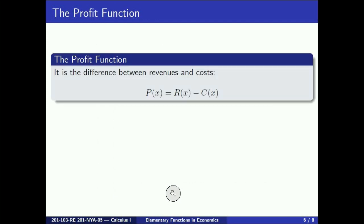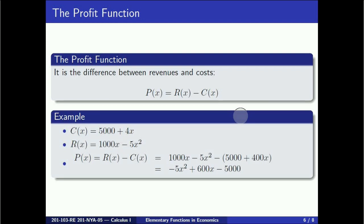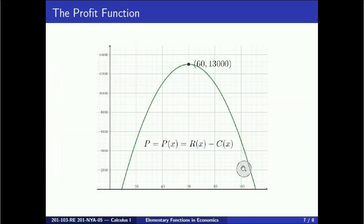The last function that we consider is the profit function. It is simply the revenues minus the costs. If we use the cost and the revenue functions from our previous examples, we get that P(x) is 1000x minus 5x squared minus 5000 plus 400x, and that simplifies to minus 5x squared plus 600x minus 5000.